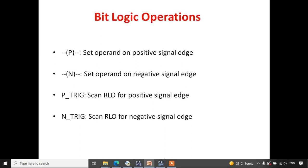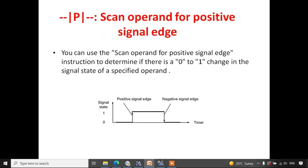Let us understand what is the meaning of positive and negative edge detection. Here in this picture we will see what is positive edge and negative edge. When you press the input — suppose we have a push button and initially it is in the zero state, meaning we have not pressed the push button — when you press it, it will go from zero to one state. This transition from zero to one is going towards the positive direction, so that is what we call the positive edge.